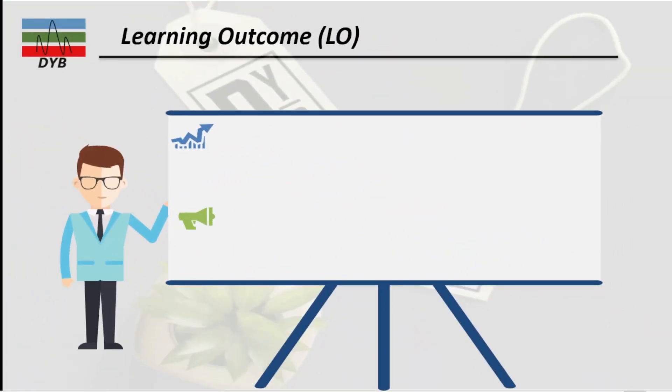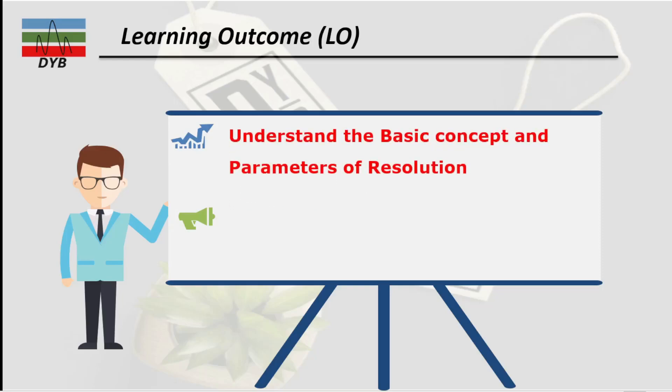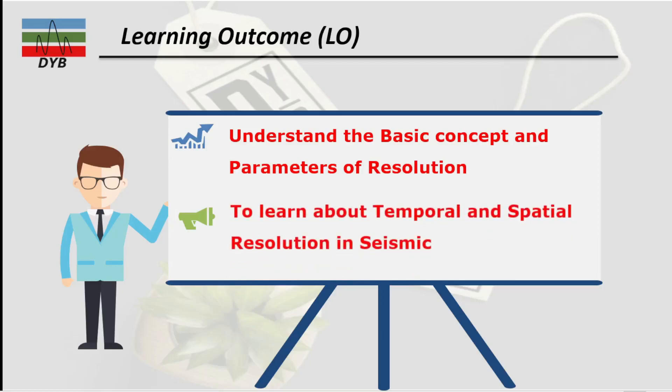Before starting the lecture, we have the learning outcomes for this piece of lecture. The first learning outcome is to understand the basic concepts and the parameters of the resolution — we will be talking about the general resolution, what type of pixels we have in the resolution and all these things. The objective of this lecture is also to learn about the temporal and spatial resolution in seismic specifically.